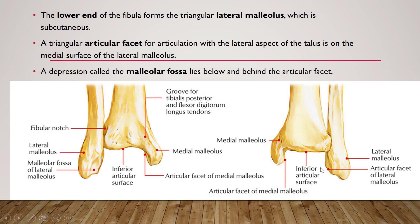The lower end of the fibula forms a triangular lateral malleolus, which is subcutaneous — just like the medial malleolus on the medial side of the tibia. These two malleoli are both subcutaneous. There is a triangular articular facet on the medial surface of the lateral malleolus for articulation with the lateral aspect of the talus. There is also a small depression called the malleolar fossa, which lies below and behind the articular facet.